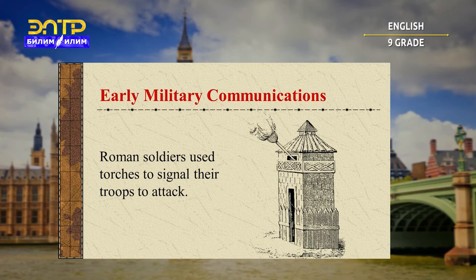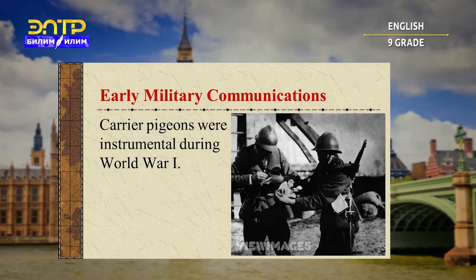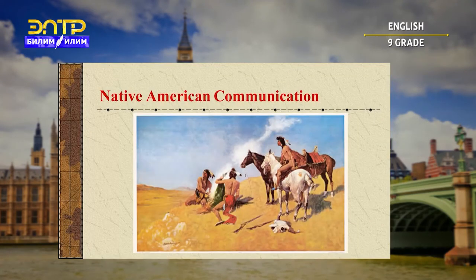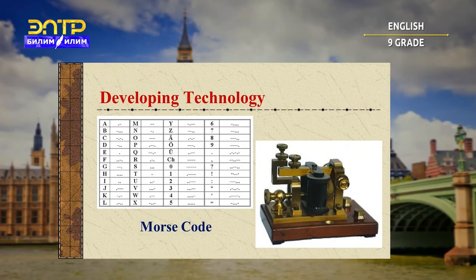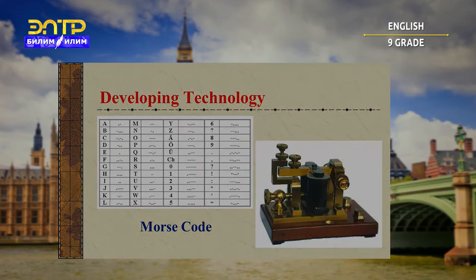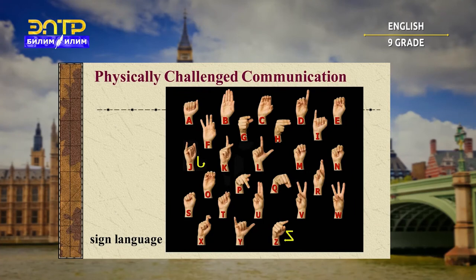Before electronic communications evolved, military forces found other ways to relay their plans. For example, Roman soldiers used torches to signal their troops to attack. Even animals were used to communicate important information — carrier pigeons were instrumental during World War I. Native Americans used smoke signals and drums, which were very effective and could be seen and heard from great distances. Sign language is also used today, as is Morse code.